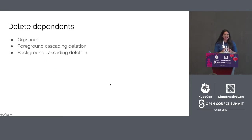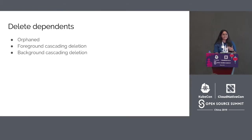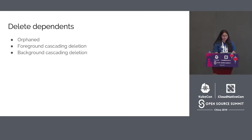Now that we know how dependencies are expressed and how the garbage collector controller builds dependency graphs, let's see how the controller deletes these objects. Broadly speaking, there are two types of garbage policies for deletion: orphaned and cascading. If an object is deleted without deleting its dependents automatically, the dependents are said to be orphaned and are cleaned later by garbage collector workers. A cascading deletion is when dependents are deleted automatically. Depending on the sequence of deletion, there are two modes of cascading: foreground and background. The cascading policy is set via the propagationPolicy field on the delete options argument.